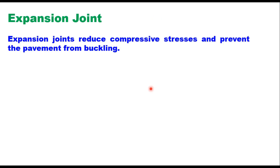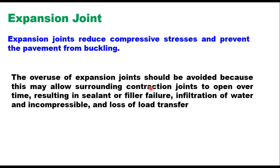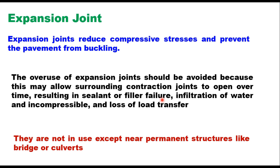Expansion joints reduce compressive stresses and prevent the pavement from buckling. However, overuse of these joints should be avoided because it may allow surrounding contraction joints to open over time, resulting in sealant or filler failure, infiltration of water and incompressible material, and loss of load transfer. Moreover, these joints are difficult to maintain and get filled with dirt and other incompressible material, causing locking of joints and preventing expansion of the slabs. Therefore their use should be kept at a minimum, and they are not in use except near permanent structures like bridges or culverts.